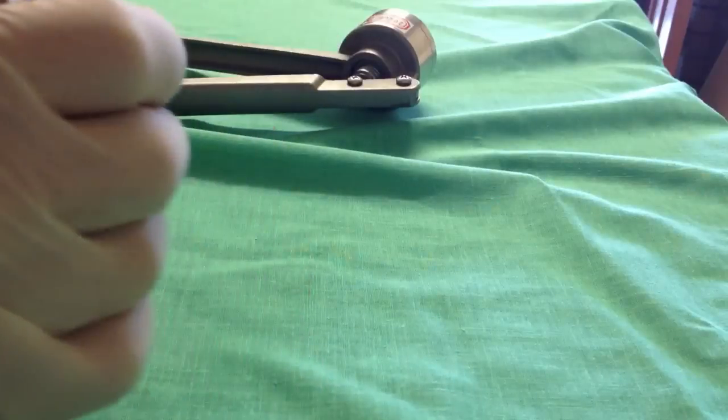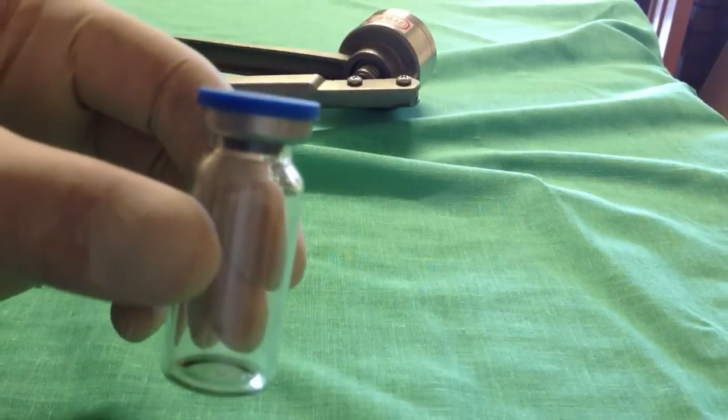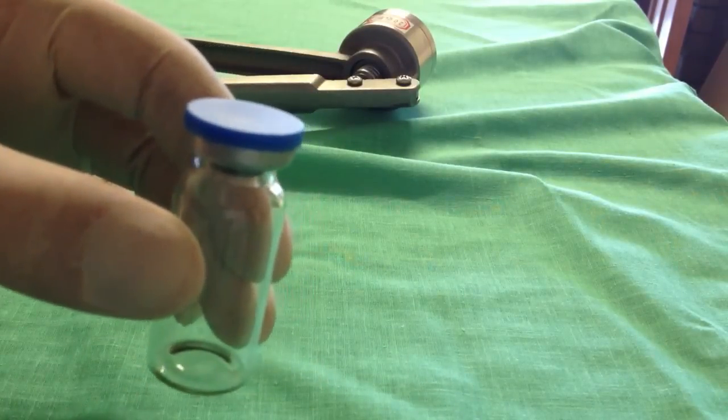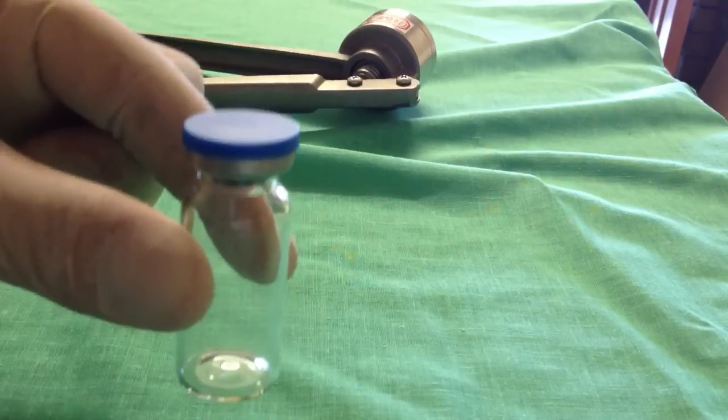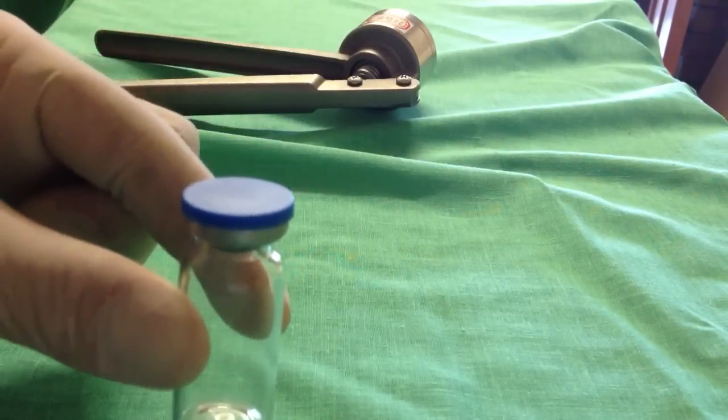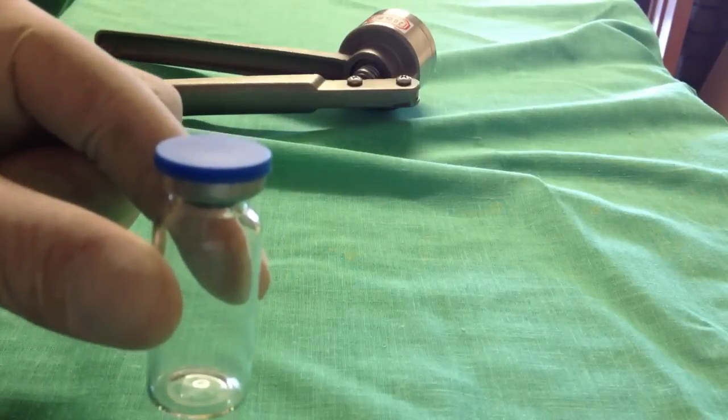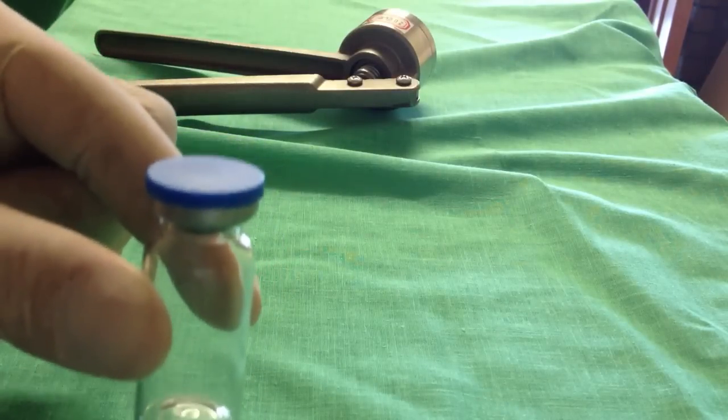And there you have the end result, which should be a fairly nice crimp. Now, most importantly, make sure, as I said, that when you put that cap on, it's leveled. Because if it's not, the actual crimper will crimp it unevenly and it might not be a tight seal.